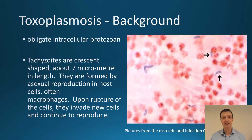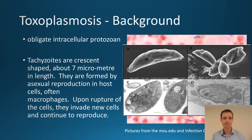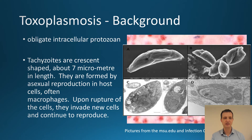Being an obligate intracellular parasite means it lives and reproduces within the cell. They're very small — about seven micrometres in length — and they carry out asexual reproduction within the host cell and reproduce sexually elsewhere. And this is what they look like: small smudgy lumps, quite small, at least seven micrometres across.